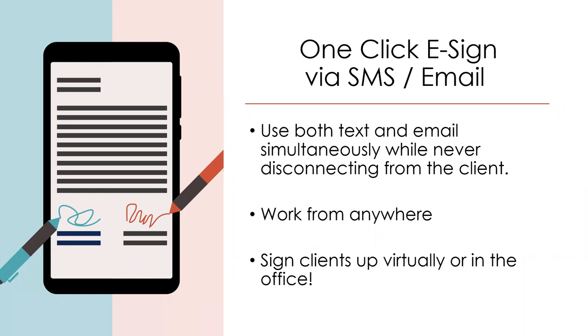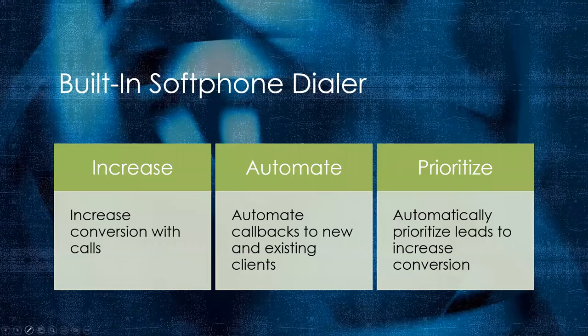The other part of this process that a lot of people forget about is phone calls. Law Ruler is one of the only CRMs out there that has a built-in phone. So if you're working remotely, or even in the office and you want an easy solution to call people and remember to call them without giving out your cell phone number, Law Ruler gives you a good solution for that. It's a soft phone available right inside the software, and you can use the automation to schedule those calls to go out.